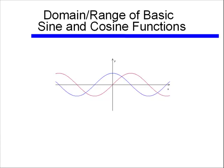While we're at it, let's talk about the domain and range of the sine and cosine functions. Remember, the domain is the possible inputs, the possible x values. And quite frankly I don't see any limit on our values of x. So the domain of both sine and cosine are negative infinity to positive infinity.